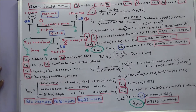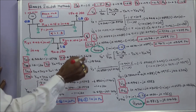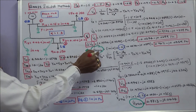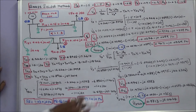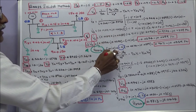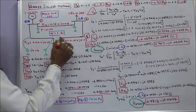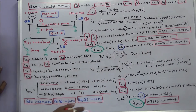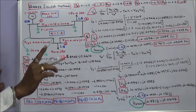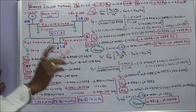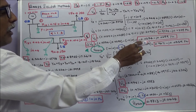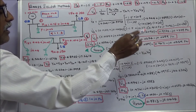Next we apply the acceleration factor. The first iteration V2 accelerated value is the assumed value (1 + j0) plus alpha (1.2) times the difference. So the first iteration V2 accelerated value is 0.9671 minus j0.0359 per unit.